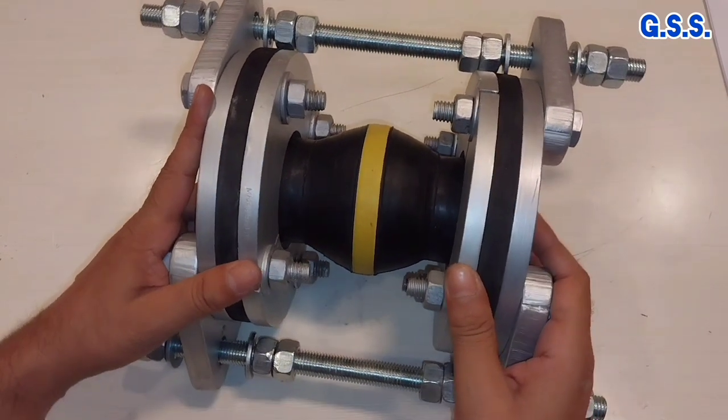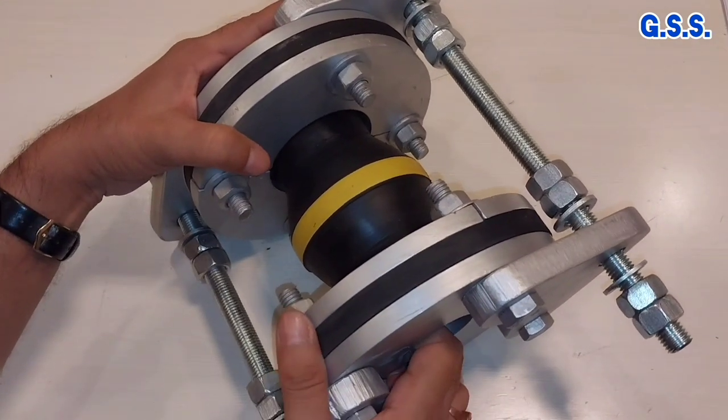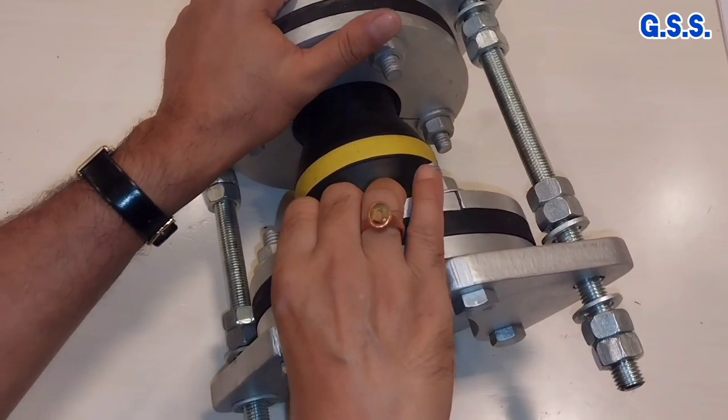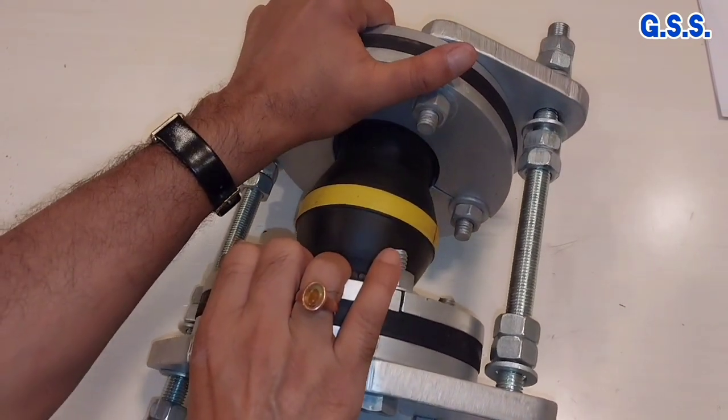This type of rubber bellow can take all kinds of movement. This is axial extension like this. This is expanding axially.